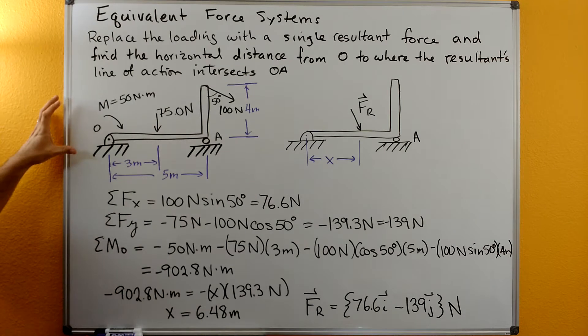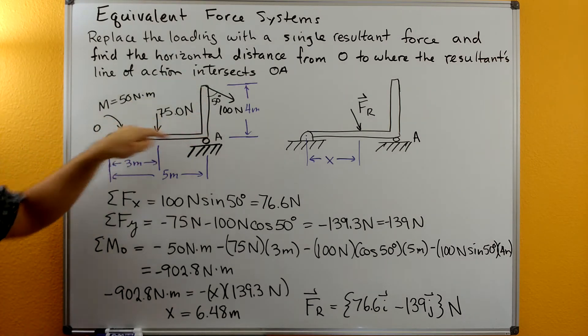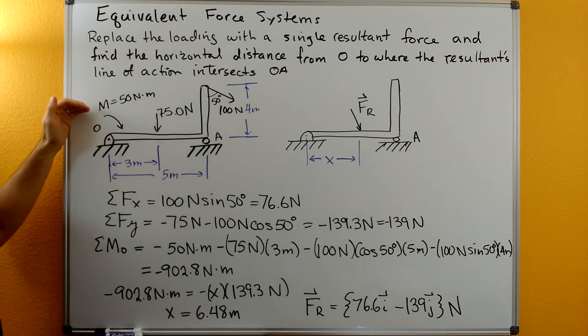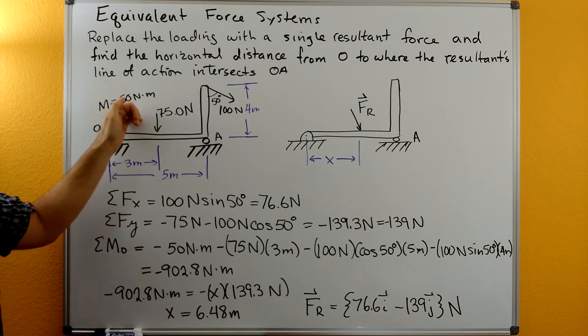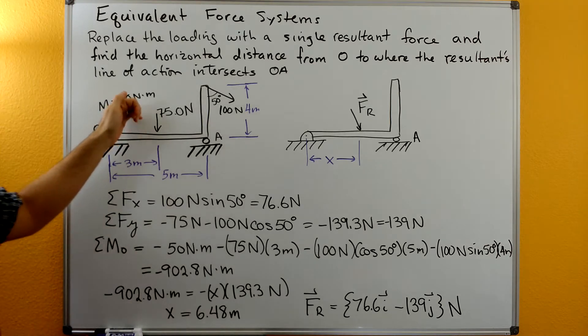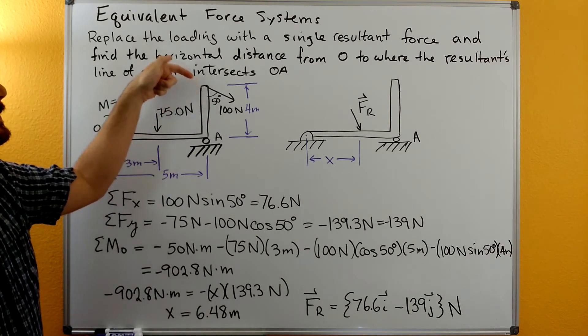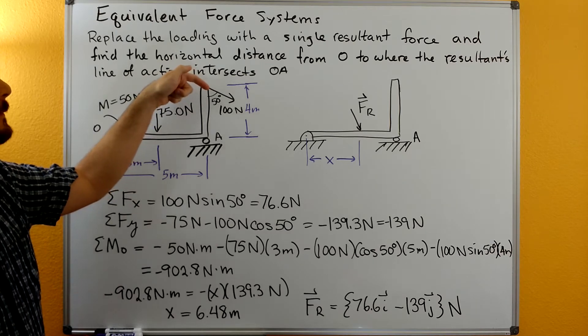For this problem we have a system where we have a beam that's at an angle. It has a moment on it at this end of 50 Newton meters in the clockwise direction. We have 75 Newtons acting down and then we have 100 Newtons at this far end acting at 50 degrees.